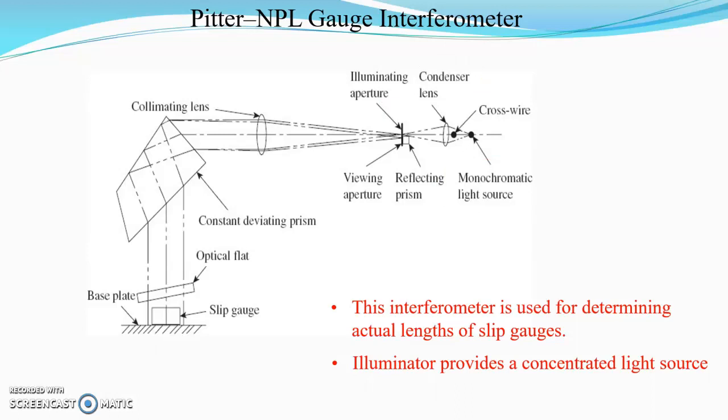The monochromatic light source is a cadmium lamp. It is condensed by a condenser lens and focused to an illuminating aperture. This provides a concentrated light source.